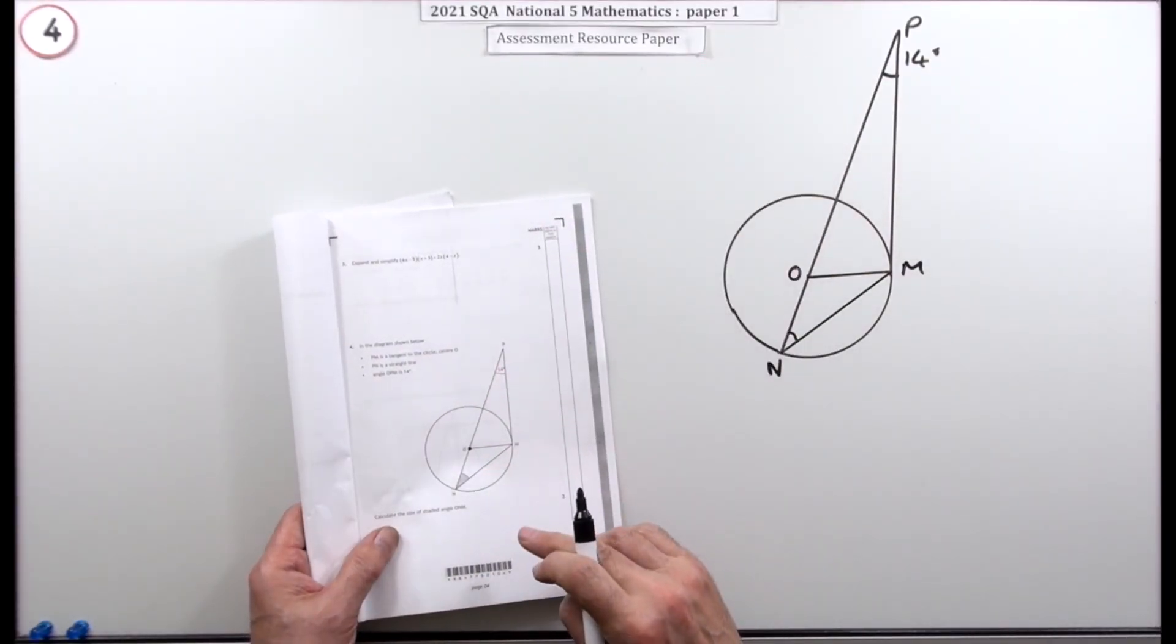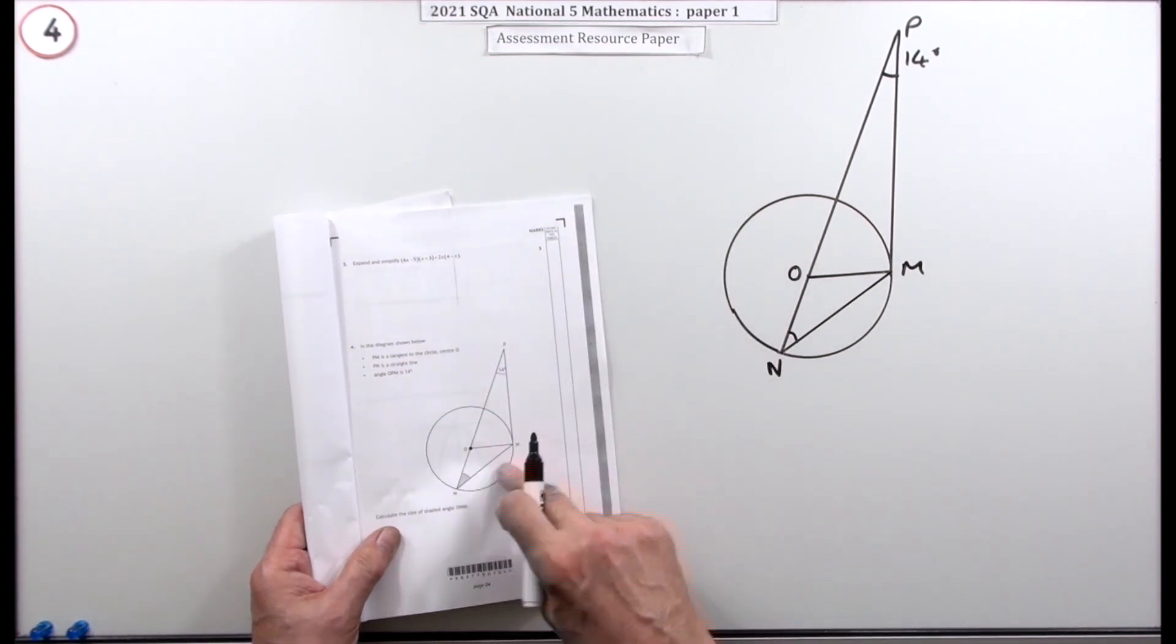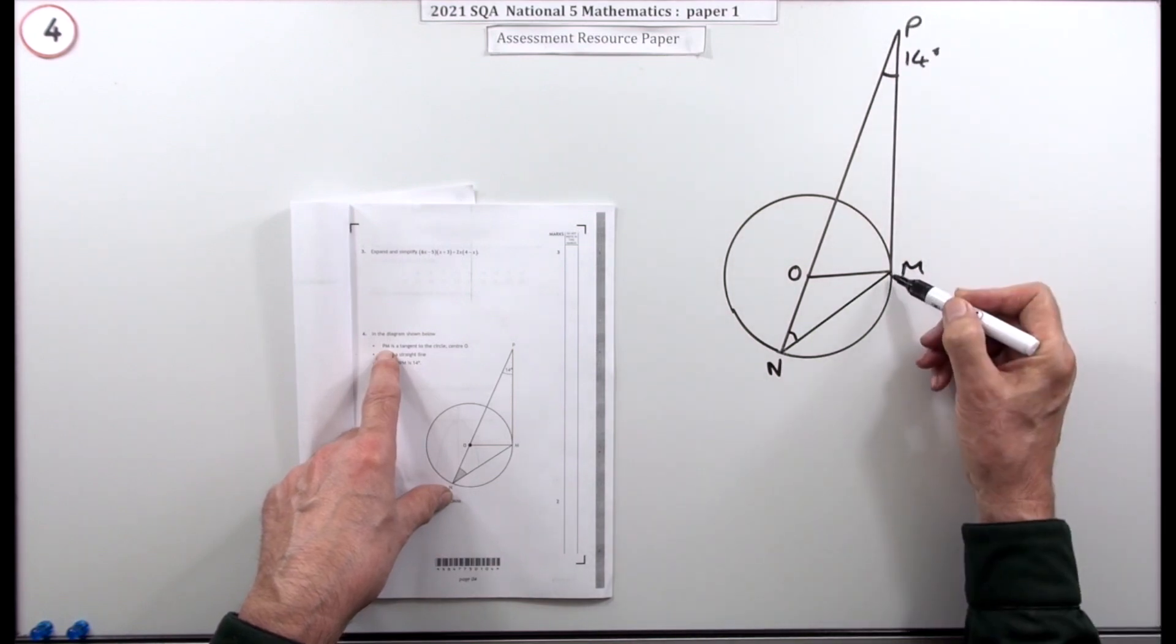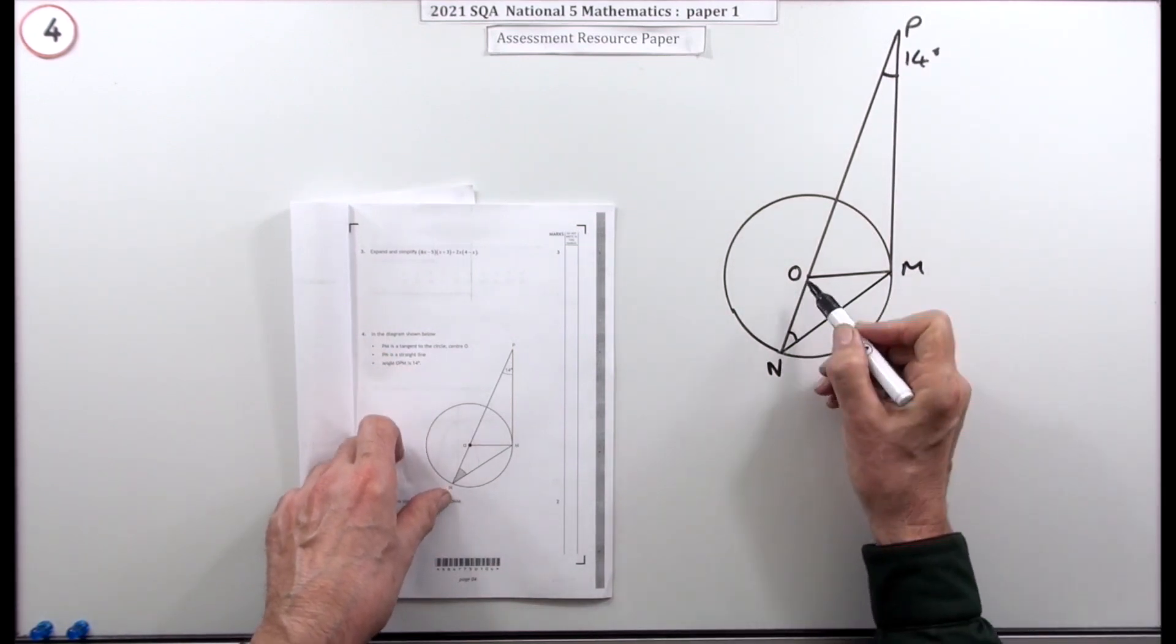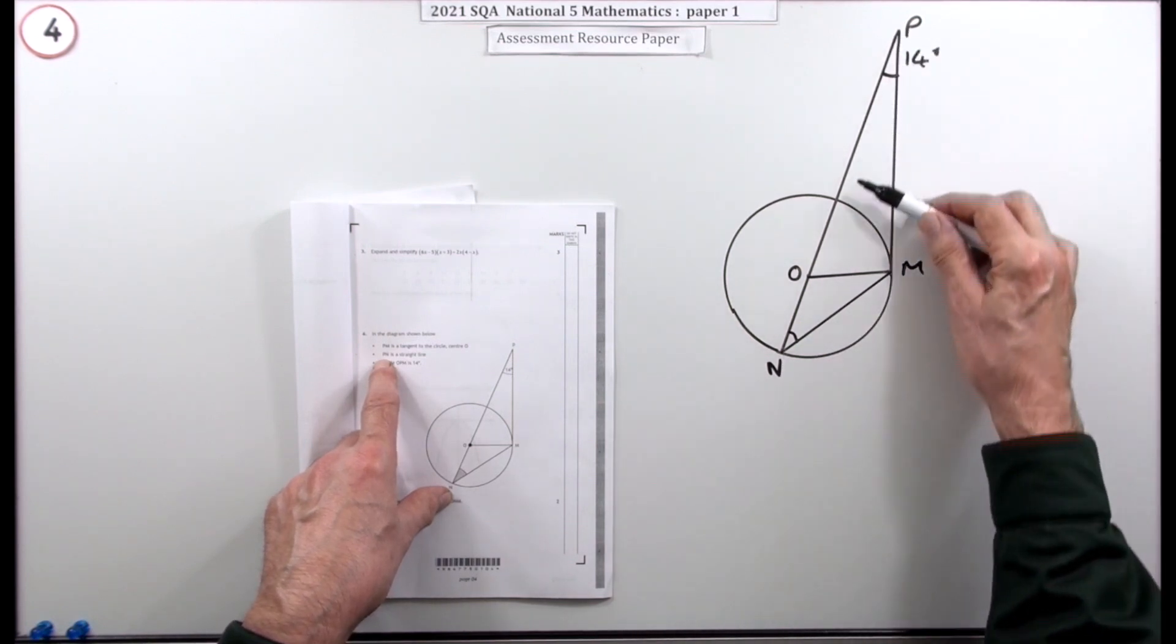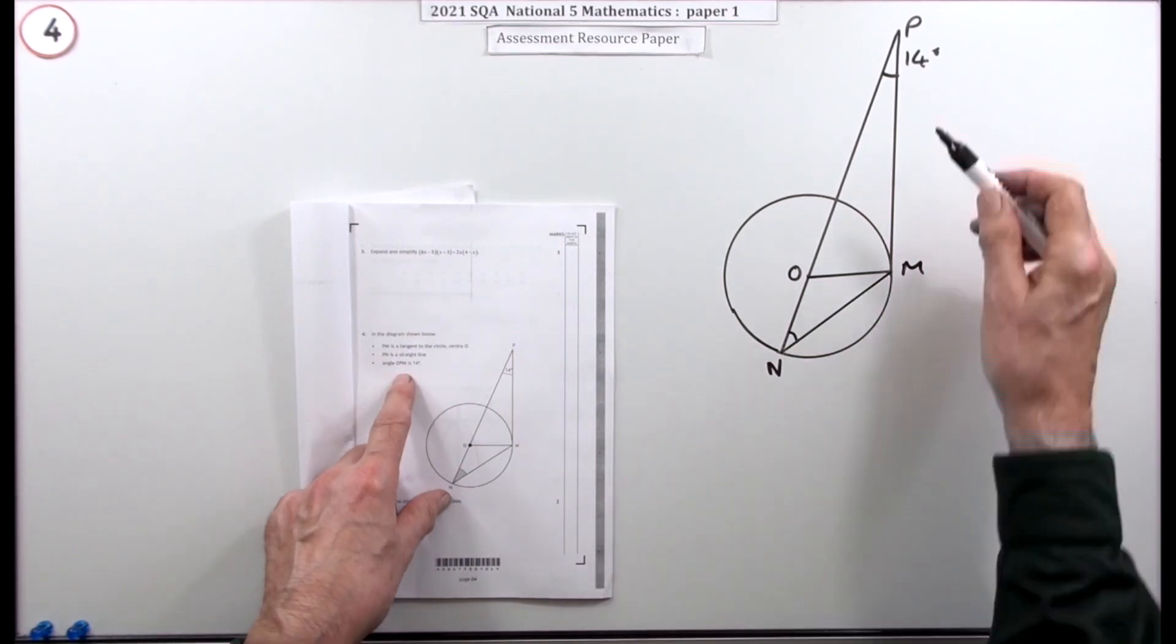Number four from paper one of the 2021 National Five resource paper: angles in a triangle. It tells you this line is a tangent to the circle center O, that PN is a straight line from P going through the center of the circle to N.